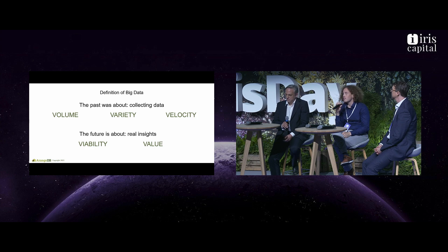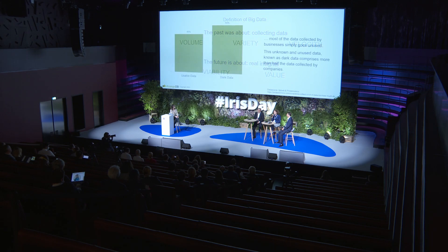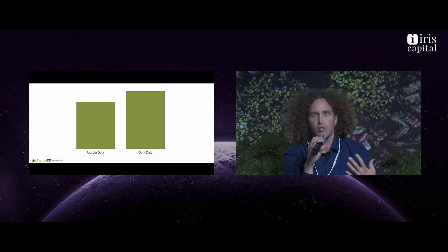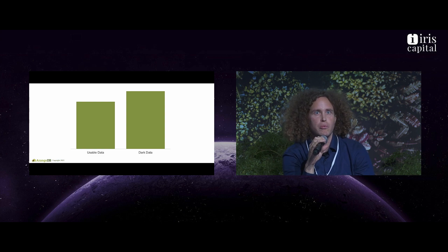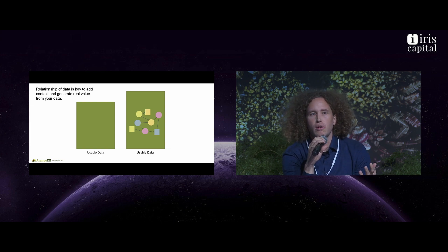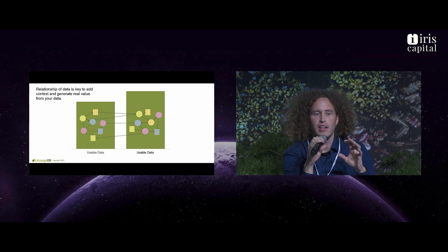This is also reflected in what Claudius mentioned earlier about dark data. If we look at data collected under the old definition of big data, really over 50% of the data is simply not usable as of right now. This is the interesting part where graph technology can really help — by identifying relationships between otherwise unusable data items and turning this dark data into something usable. Furthermore, it's not only helping with previously unused data; even with the usable data we had before, we can now extract much more value because we can focus on the relationships in between.